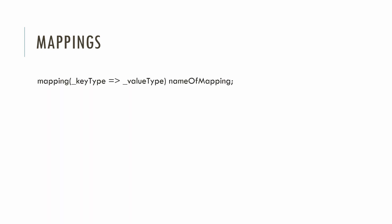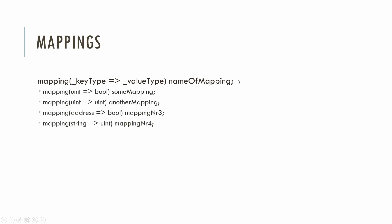A mapping in Solidity looks like this: the mapping keyword, then a key type and a value type, and then the name of the mapping. These are all valid examples: mapping an unsigned integer to a boolean with the name SUMMAPPING; mapping an unsigned integer to an unsigned integer with another mapping; mapping an address to a boolean with the name mapping number 3; and mapping a string to an unsigned integer, mapping number 4.